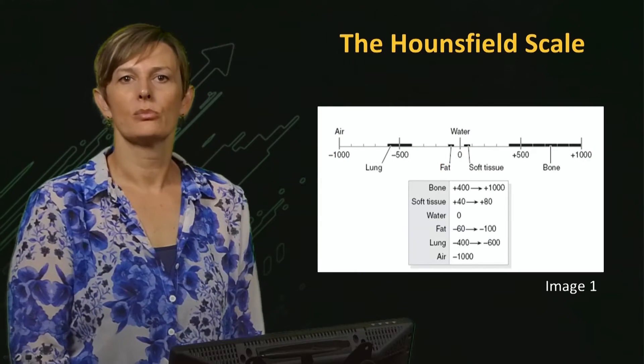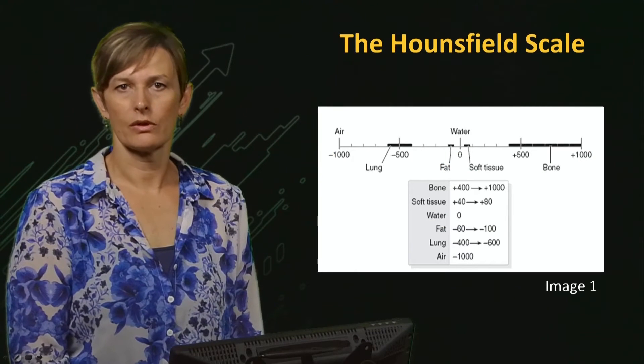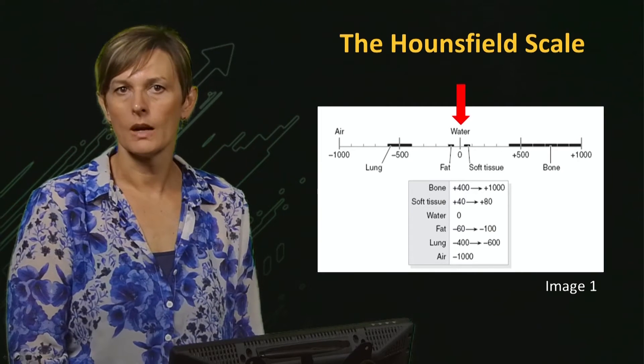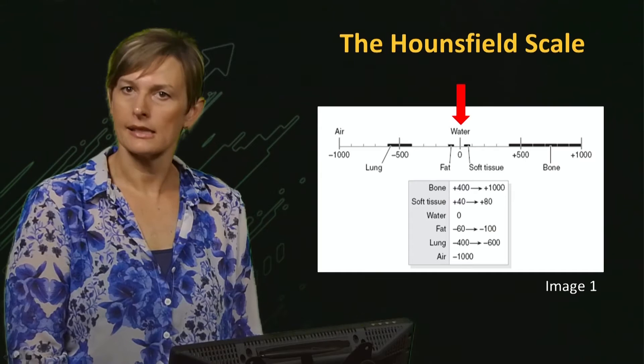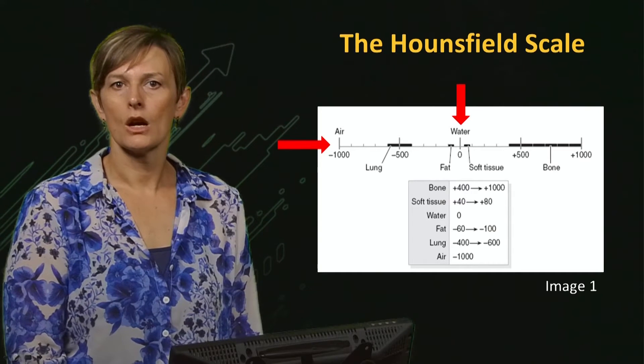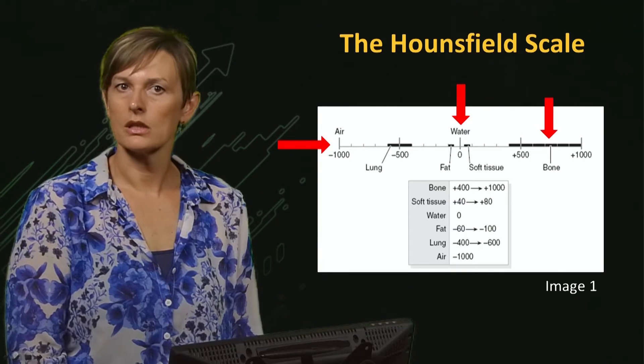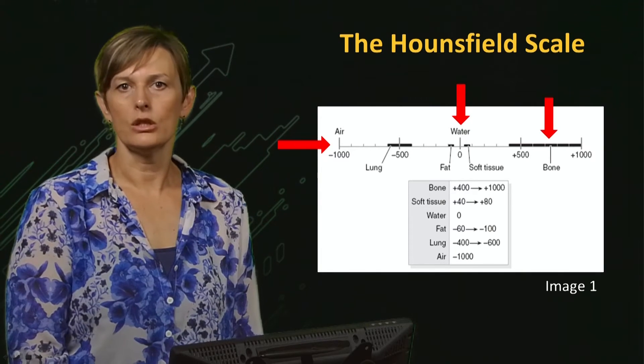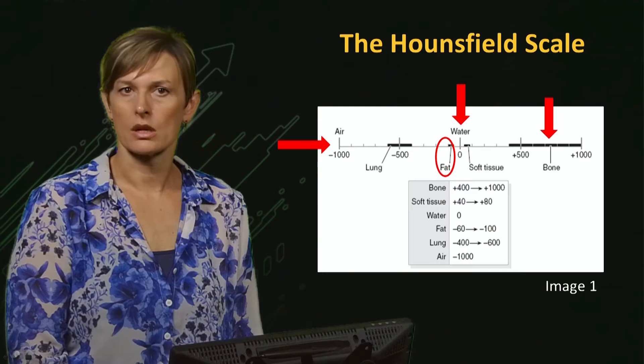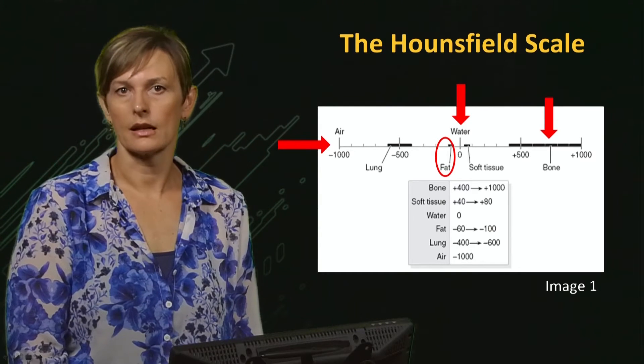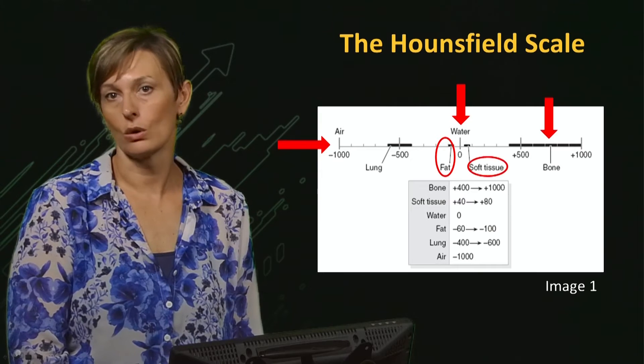Here is an example of the Hounsfield scale applied to several body parts. As you can see, the HU of water is set to zero, while the HU of air is set to minus thousand. The HU of bone is typically greater than 500. Fat and fatty tissues have HU around minus hundred, while soft tissue, composed mostly of water, have HU in the range of zero to hundred.